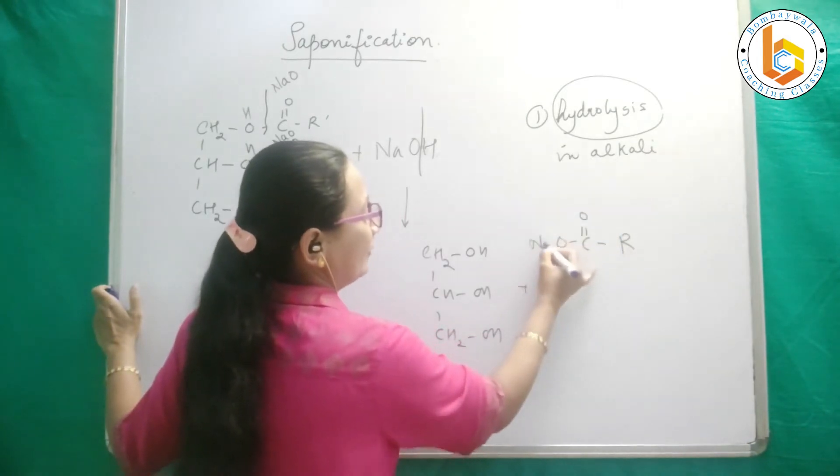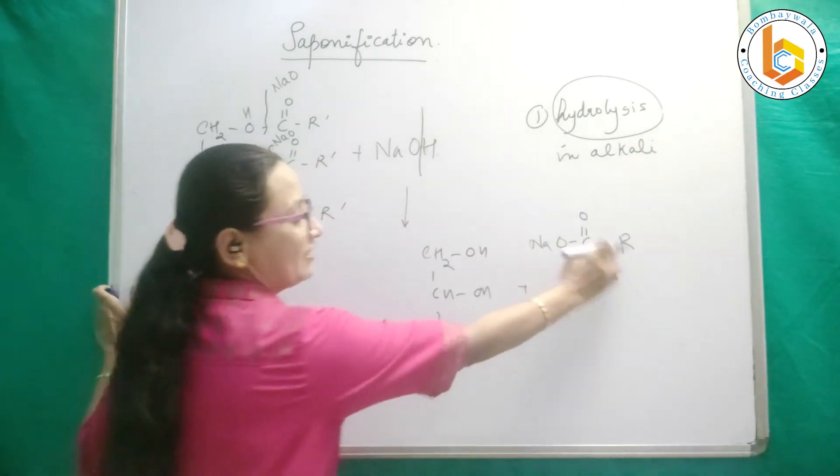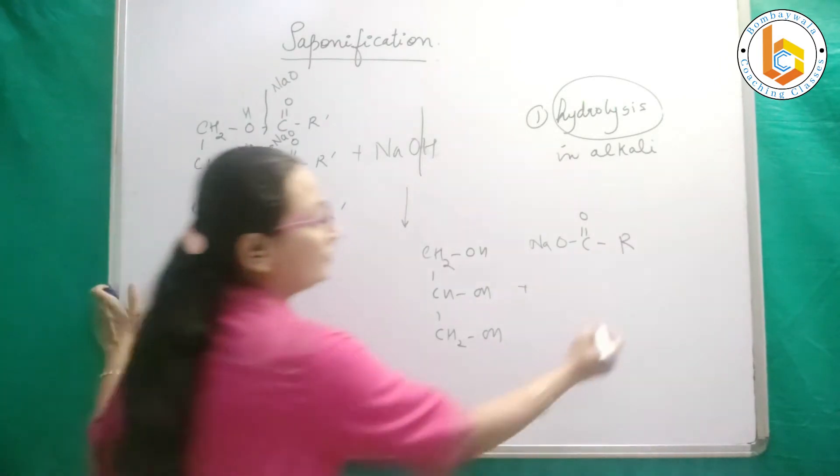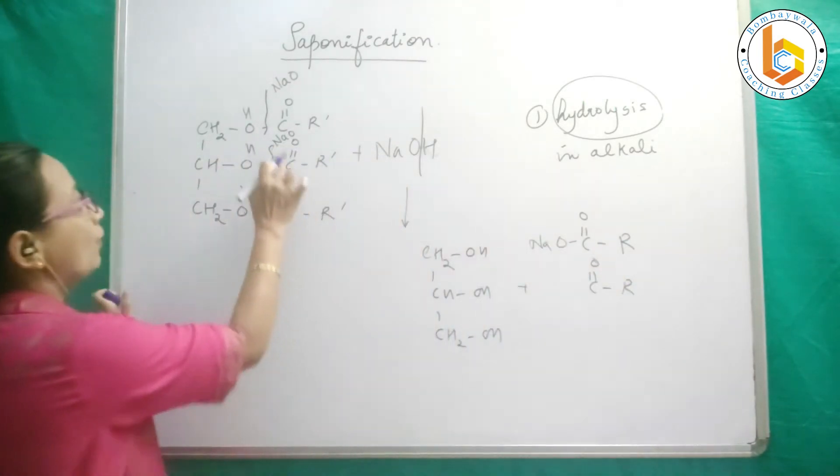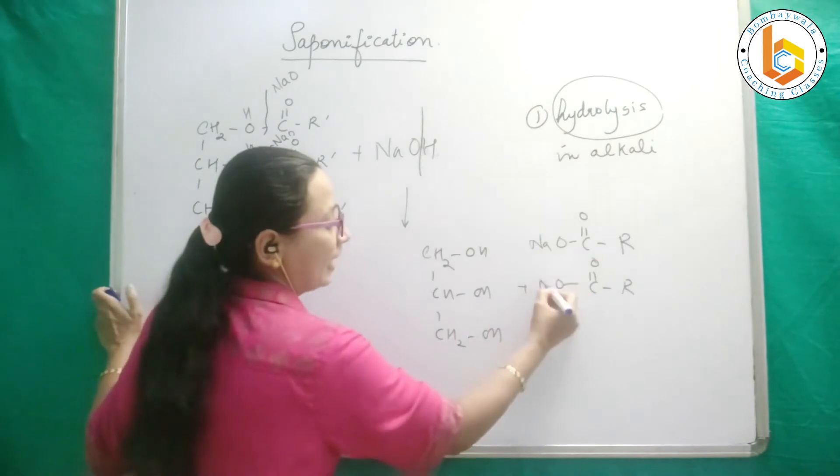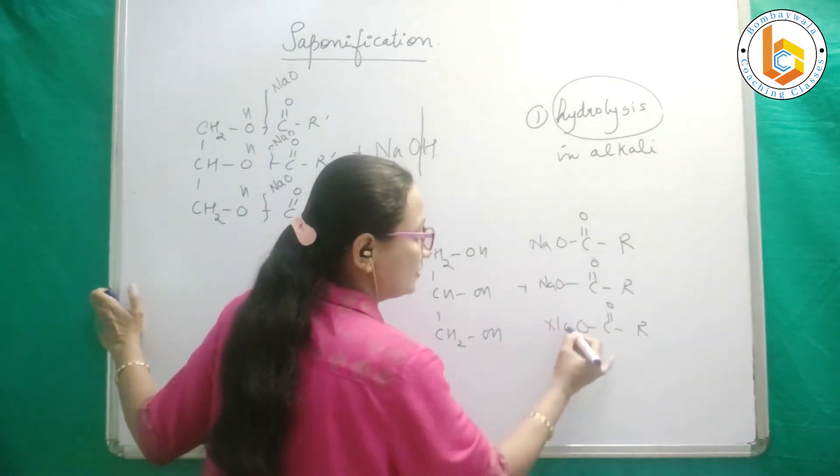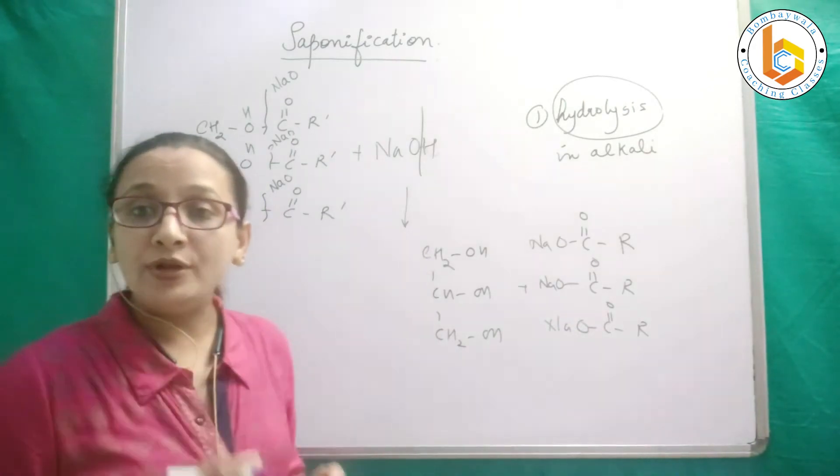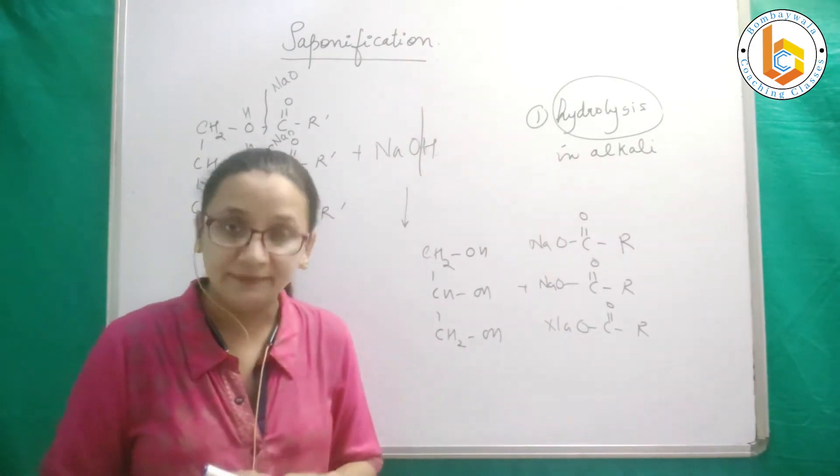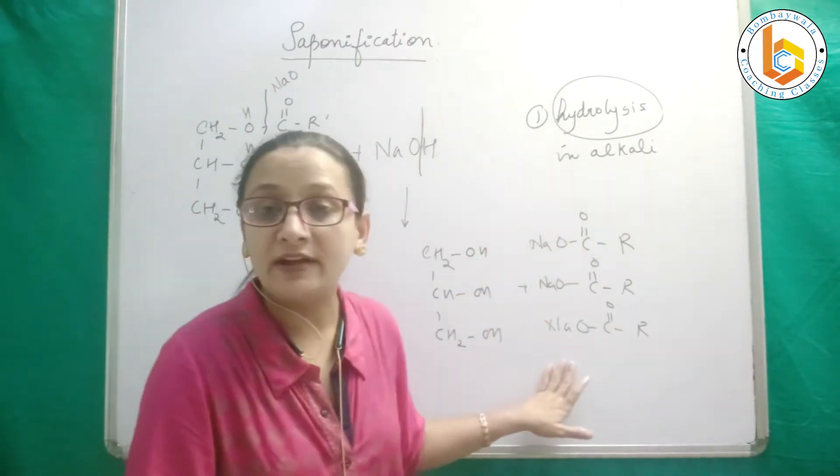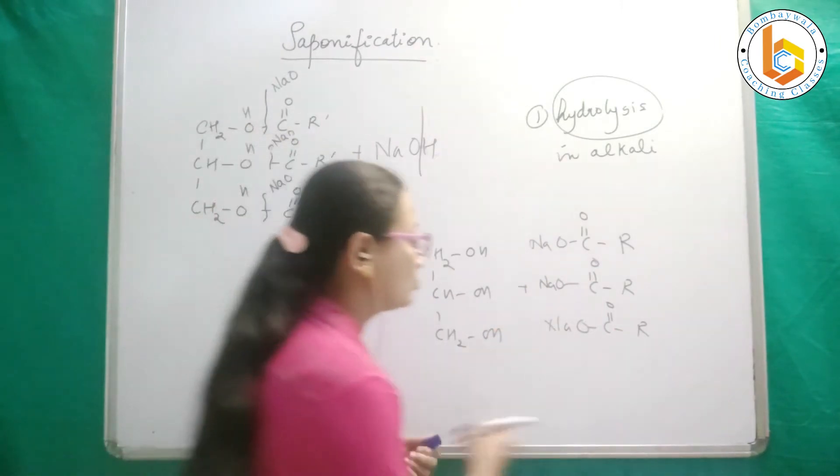That means I get glycerol plus I get R-C double bond O-O-Na, sodium salt of fatty acid. Another molecule of R-C double bond O-O-Na, and the third molecule of C.